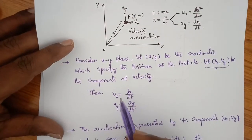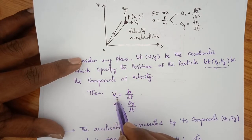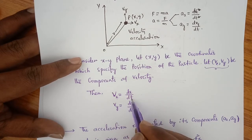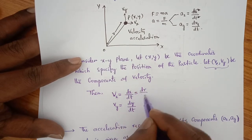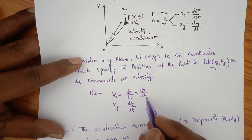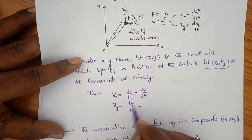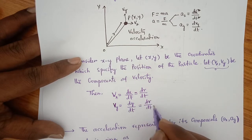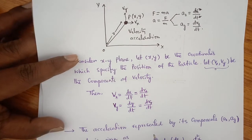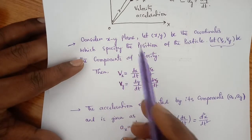We can write VX equals dX/dt. Velocity of the particle in the X direction is position by time, which we can also write as dR/dt — that is, displacement by time or position by time. Similarly, the component of velocity in the Y direction is dY/dt, or dRY/dt, and VX can be written as dRX/dt.